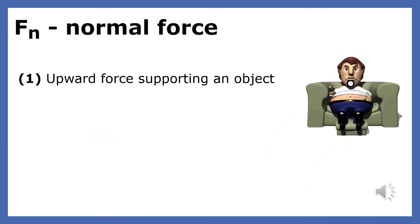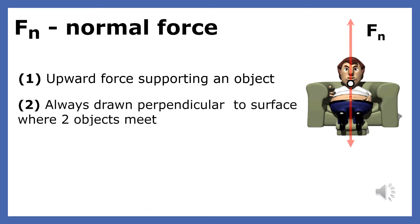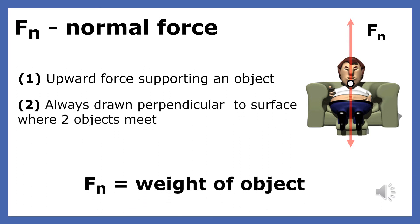The technical term for the table's force on the lamp and the chair's force on the man is called the normal force. A normal force is the upward force that supports an object. It is always drawn perpendicular to the surface where the two objects meet.